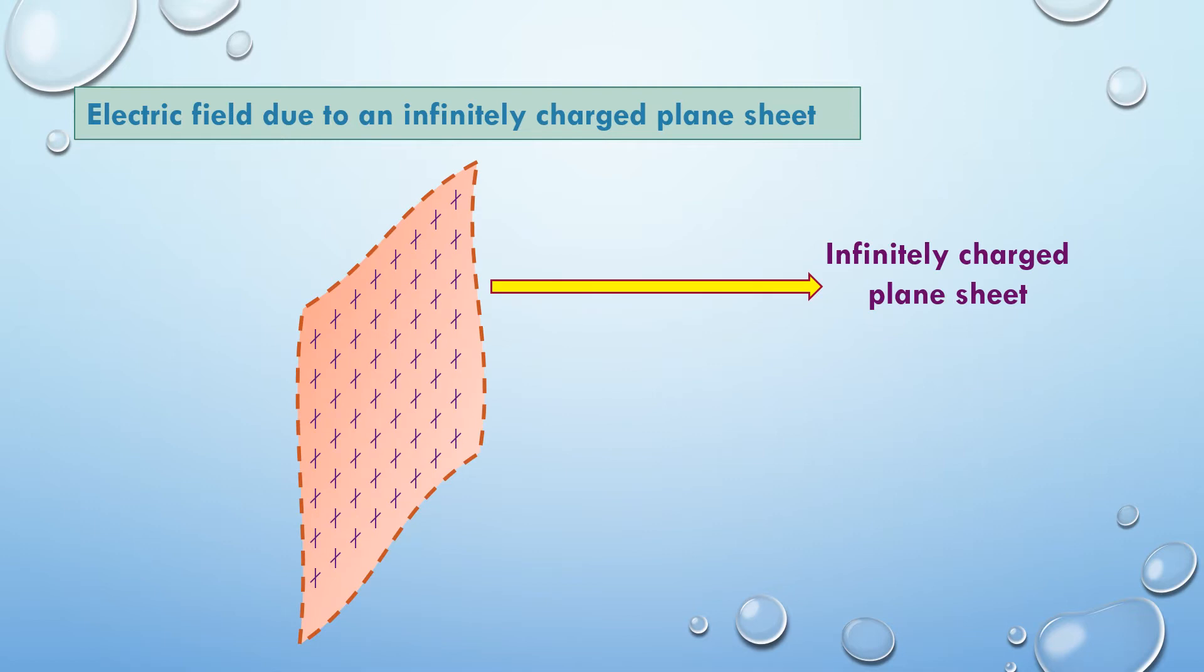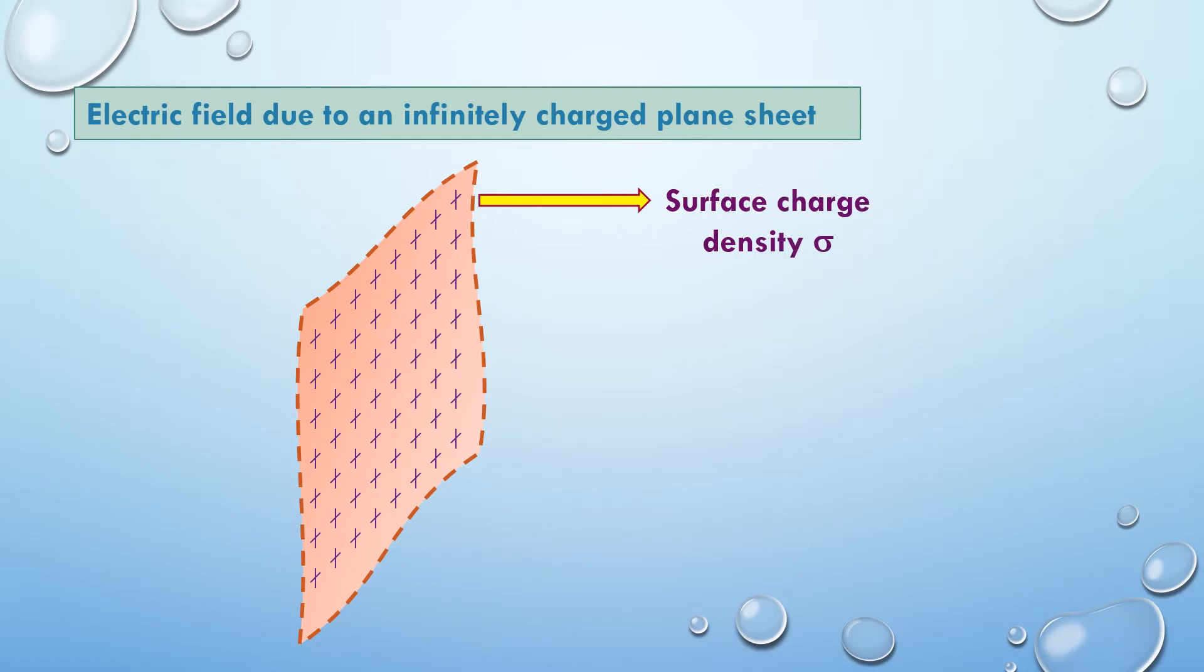Let us consider an infinite plane charge sheet. To find the electric field due to this, we will first consider the surface charge density of this sheet to be equal to sigma.